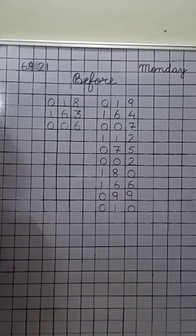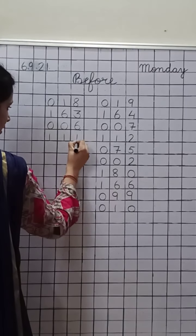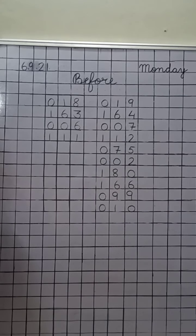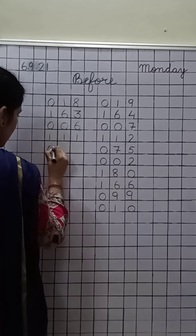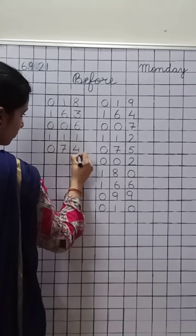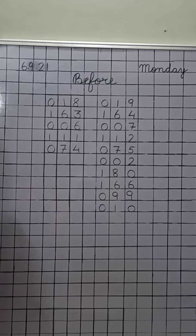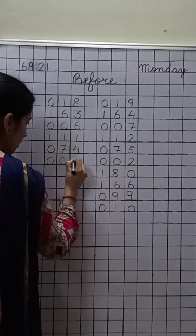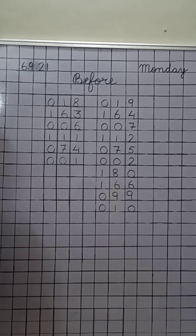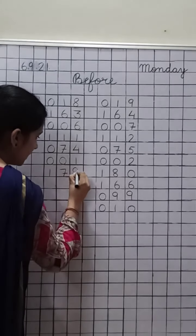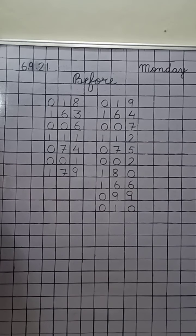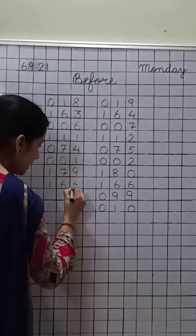Before one hundred twelve — one hundred eleven. Very good, write down one hundred eleven. Before seventy five — seventy four. Yes, write down seventy four. Before only two — only one. What comes before one hundred eighty? One hundred seventy nine. Very good, excellent. Write down one hundred seventy nine. Before one hundred sixty six — one hundred sixty five. Well done, write down one hundred sixty five.